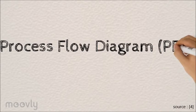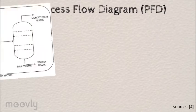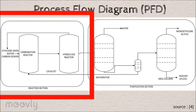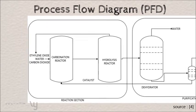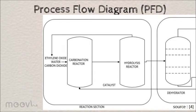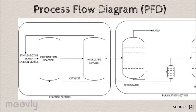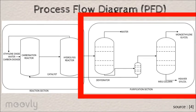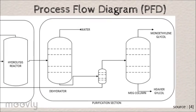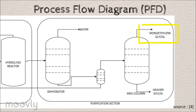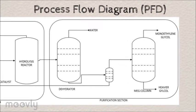This is the engineering process flow diagram of the omega plant. The first section is the reaction section where ethylene glycol is produced by carbonation followed by hydrolysis. The second section is to purify and obtain higher quality ethylene glycol.